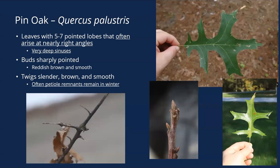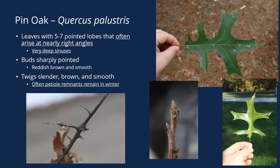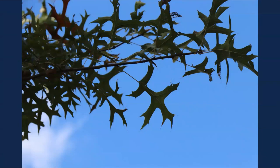Pin oak looks a lot like northern pin oak — the leaves have five to seven pointed lobes that often arise at almost right angles with really deep sinuses between them. Usually five, sometimes seven lobes. Buds are sharply pointed. The twigs are interesting: oftentimes the petioles from the previous year's leaves will be retained on the twigs even after the leaf itself falls off, so in wintertime if you see a bunch of little petioles hanging onto the leaf scars, that tends to be fairly consistent with pin oak. Really classic pin oak leaves — those right-angle lobes and really deep sinuses.